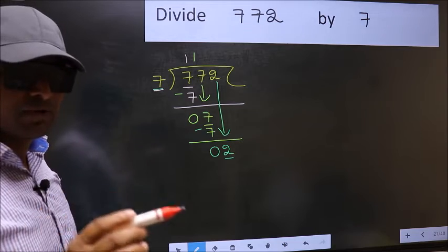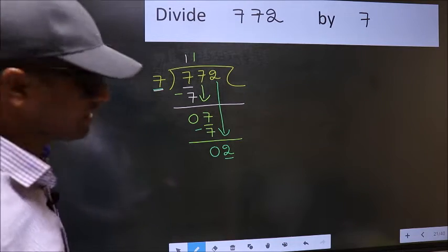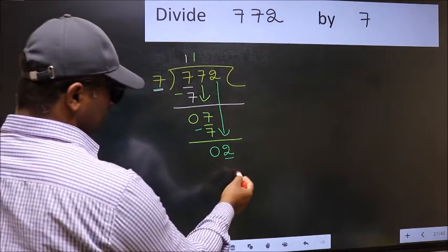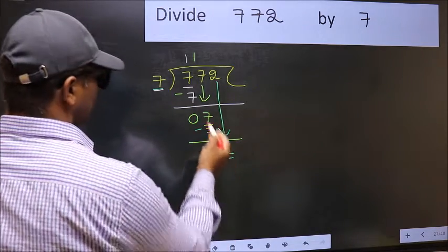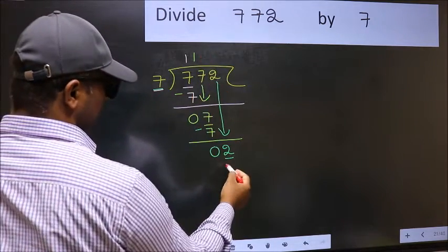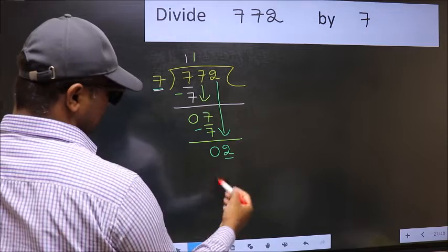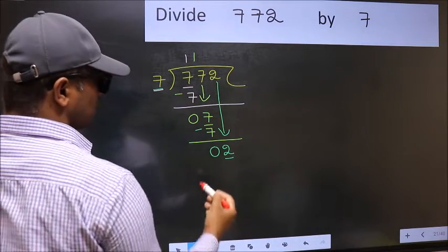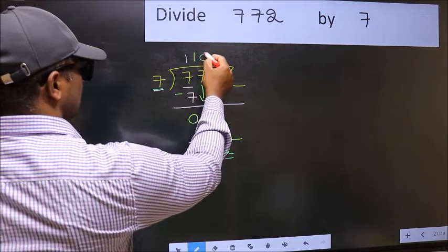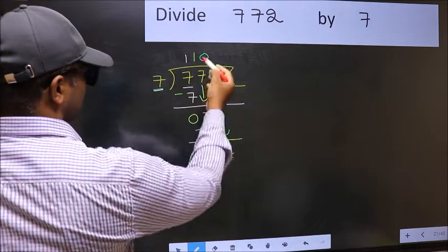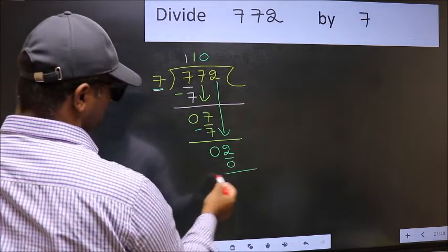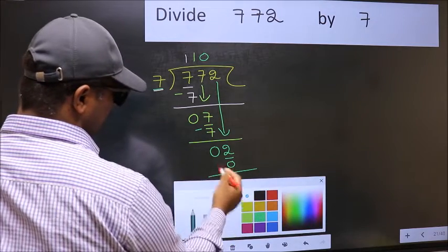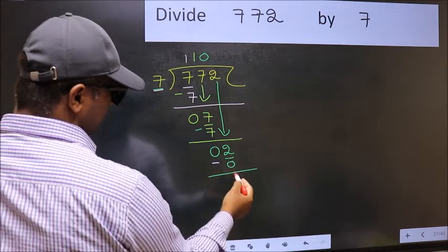Instead, what you should think of doing is, which number should we write here. If I take 1, we will get 7. But 7 is larger than 2. So what we should do is, we should take 0. So 7 into 0, 0. Now you should subtract. 2 minus 0, 2.